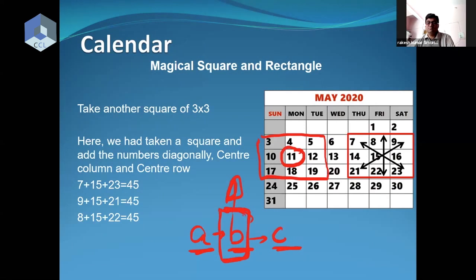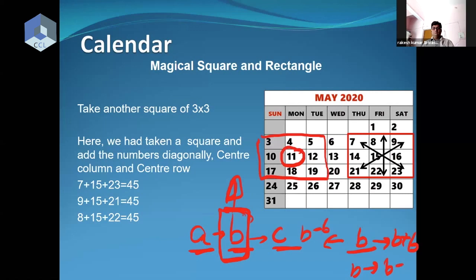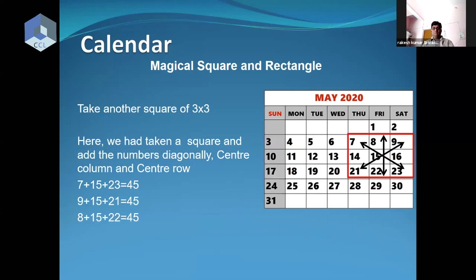Because you can write the center number as B. This number is B plus some delta, say six — so the left number will be B minus six. And if another number is B plus eight, the opposite will be B minus eight. Similarly, 11 minus six is 5 and 11 plus six is 17. That is another way of looking at this magic square.